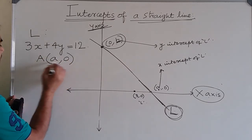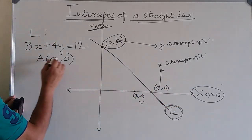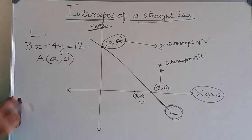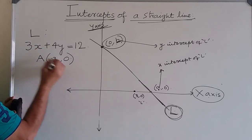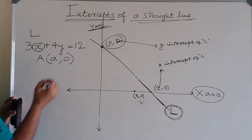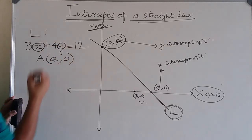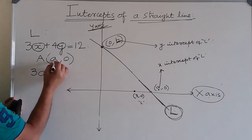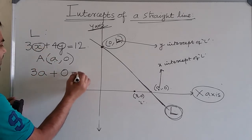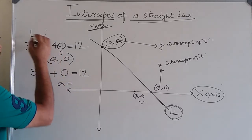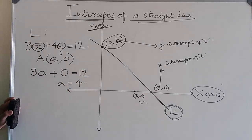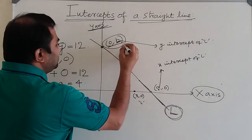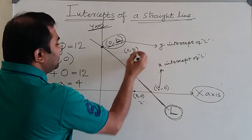For the x-intercept, remember it as the point (a, 0) on the x-axis through which the line is passing. Since the point lies on the line, substitute x-coordinate a in place of x and 0 in place of y. Doing this gives us the x-intercept a of line L, which will be 4.